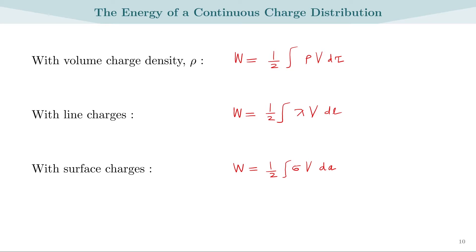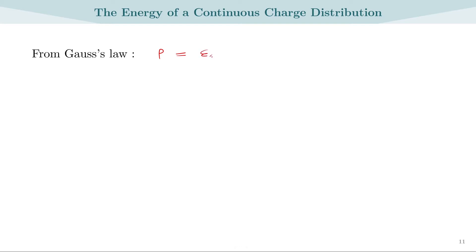Now let us find a way to write these equations without rho, lambda, sigma, or V — we will write an equation using only the electric field E. From Gauss's law, we can write the charge density rho as equal to epsilon-0 times the divergence of E. The expression for work done then becomes epsilon-0 over 2 times the integral of (divergence of E) times V d-tau.